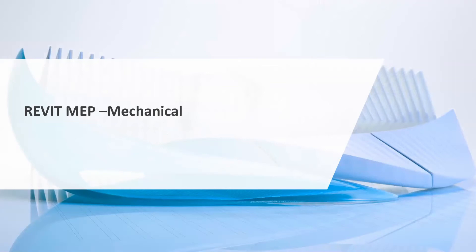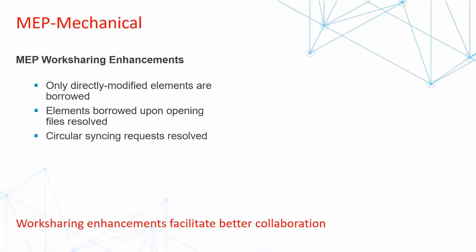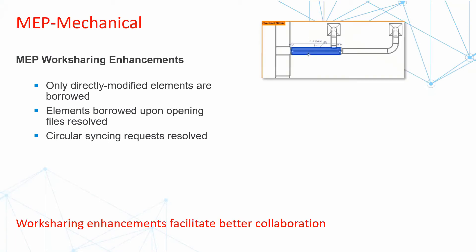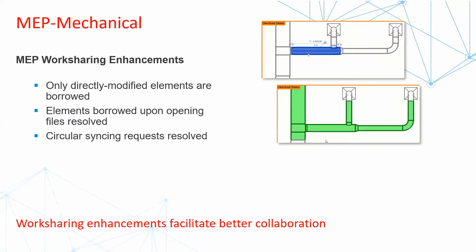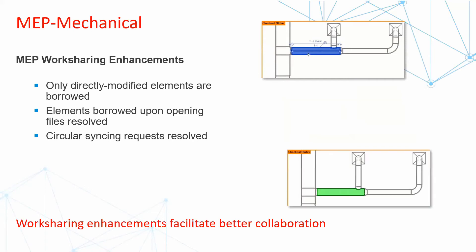Those were the overall platform features that everybody can use in Revit 2021. Now for the mechanical-specific features. Under MEP work sharing enhancements: only directly modified elements are borrowed, elements borrowed upon opening files are resolved, and circular syncing requests are resolved. In the past, when you selected or checked out an item it would affect everything else that the item was connected to. Now when you check out an item, that is the only item that you are able to modify.